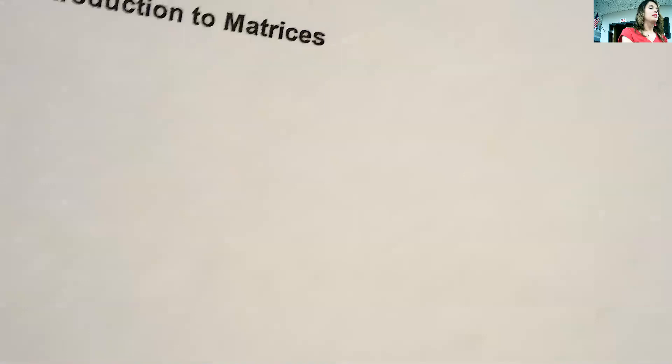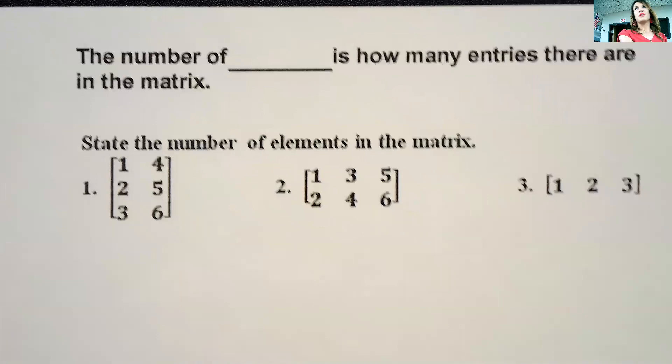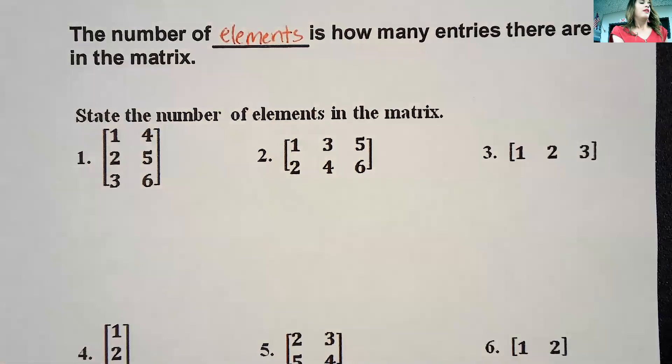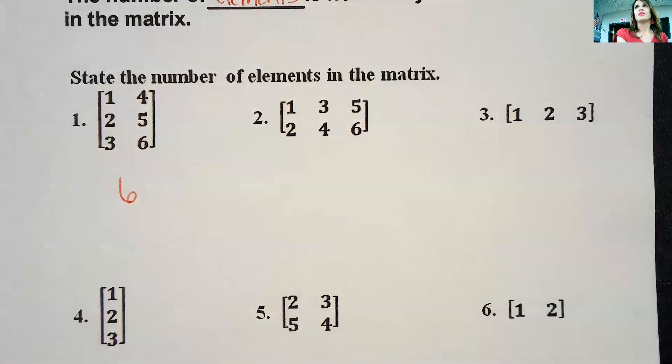We're going to talk about all the vocabulary of the matrix today so when we're going through the chapter you know what we call things. First, the number of elements. Elements is what they call the entries of the matrix.